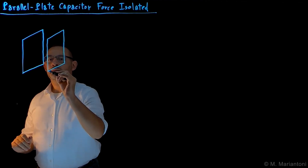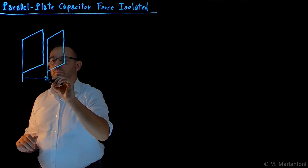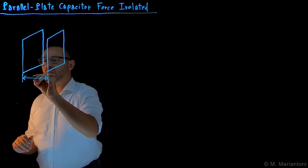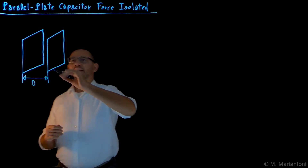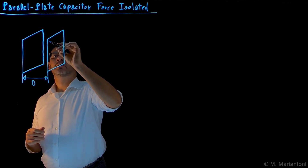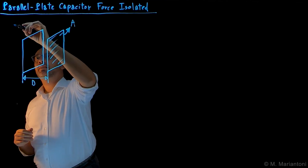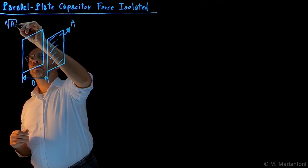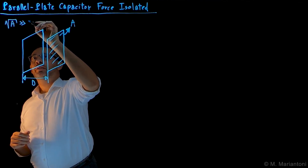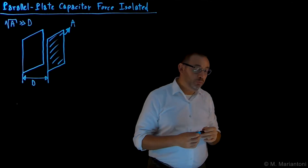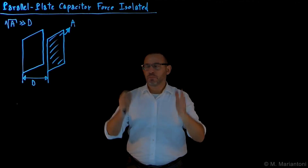The distance between these two plates, let us call it capital D. We usually call it small d, but it is better to call it capital D so as not to confuse it with the small d of the differential. The area of one of these two plates, let's call it capital A, such that the square root of capital A — the linear dimension of the plates — is much larger than capital D. So we can assume all the results of two infinite planes of charge and all their symmetries.